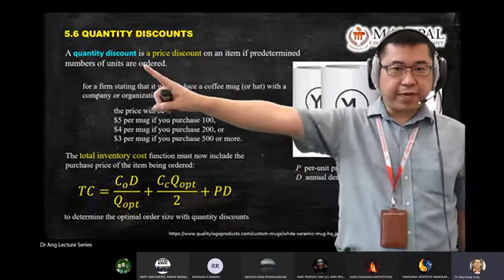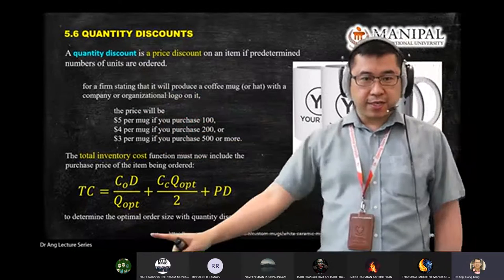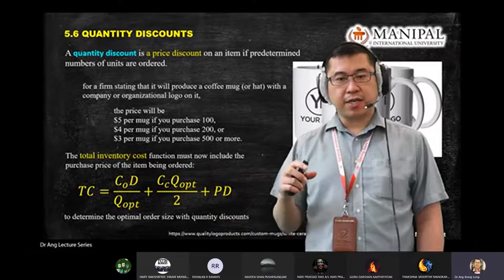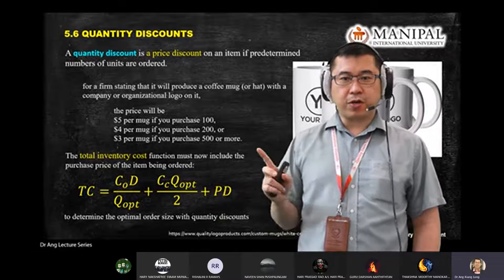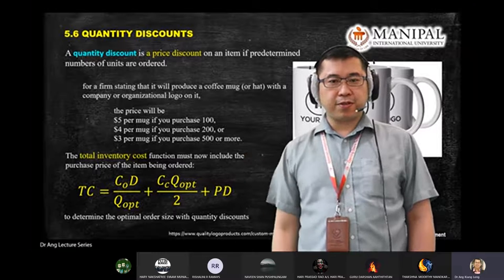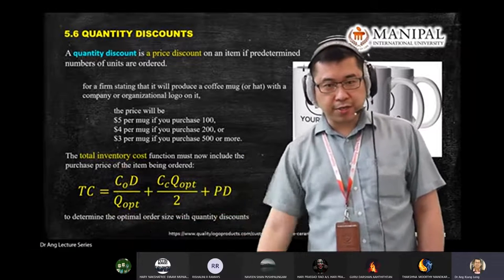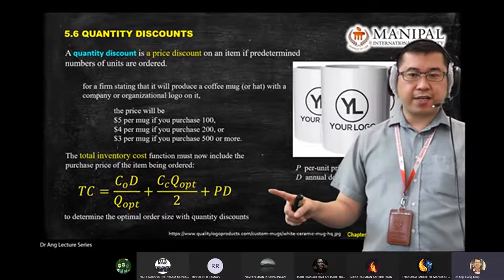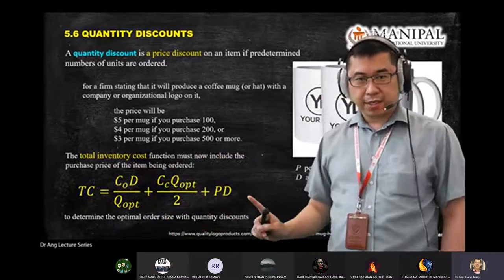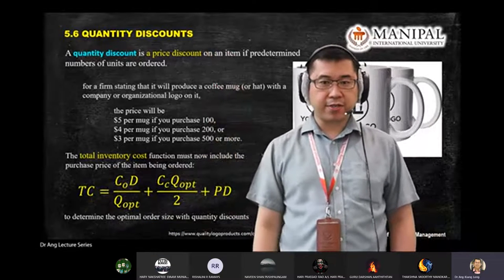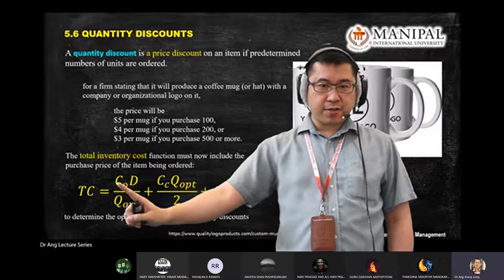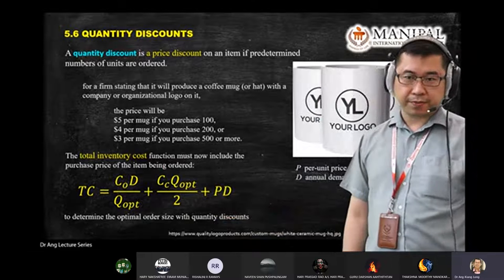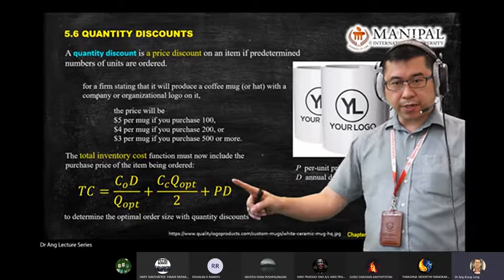This equation is to determine the optimum order size with quantity discount — whether ordering more saves more costs, or whether ordering more means you pay more. The total inventory cost under the discount rate scenario equals: ordering cost component plus carrying cost component plus the discount purchase component (P × D). Copy this equation — this is for the quantity discount section.